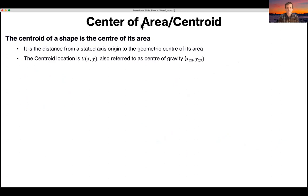A centroid of area is simply put, the center of its area. It is the distance from a stated origin to the geometric center of its area. It's often given the notation X bar, Y bar, or as in the textbook, XCG, YCG. And for a regular shape like a square or for a circle, then it's self-evident.